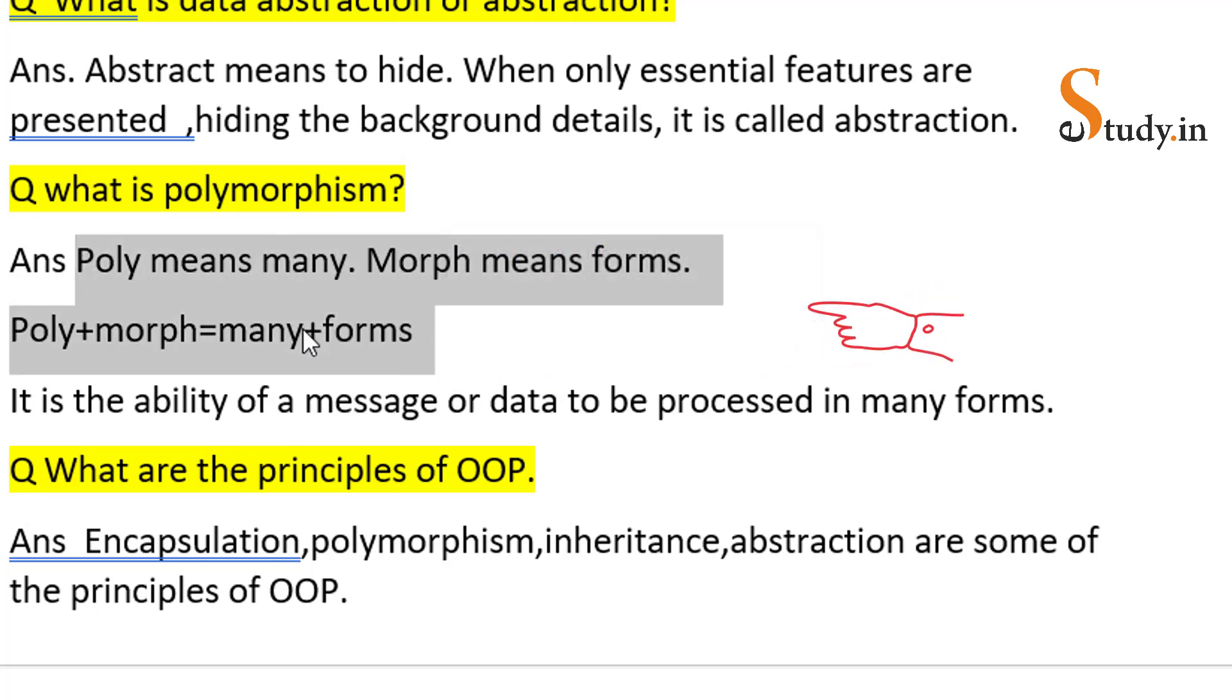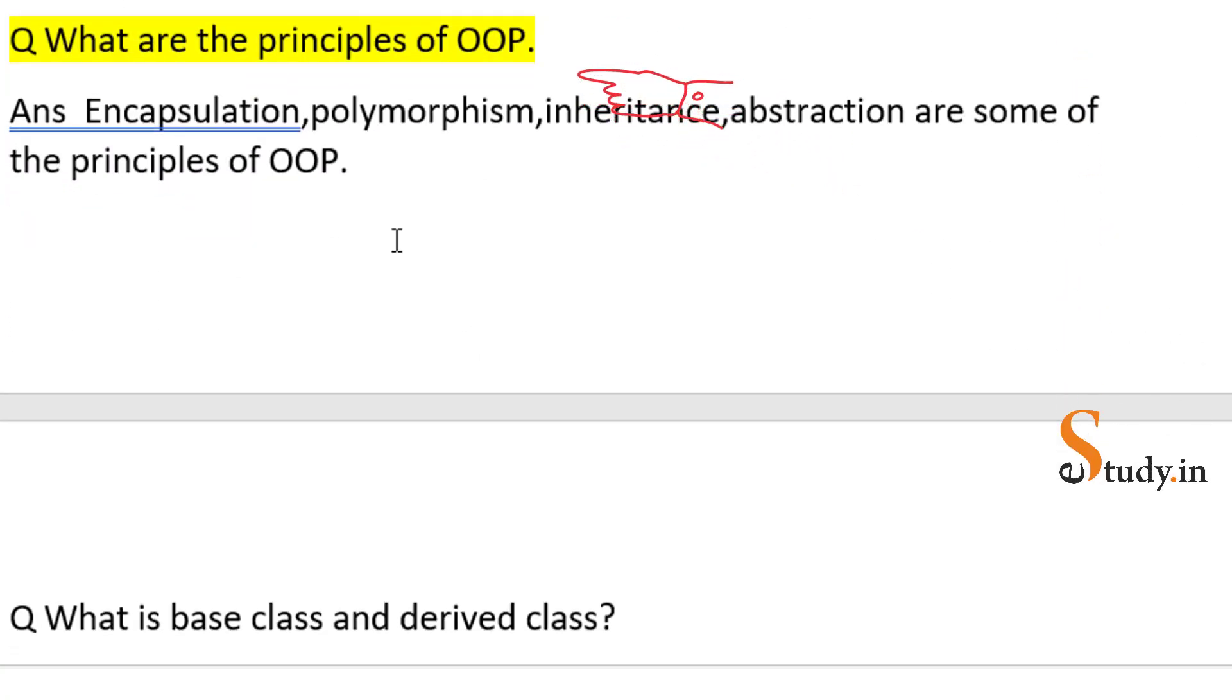Now the next is 'What are the principles of OOP?' This can be put in another way: What are the concepts of object-oriented programming? Just remember you need to write encapsulation, polymorphism, inheritance, abstraction. You need not get into detail or definition of these. This is a two marks question, they're just asking you the names.